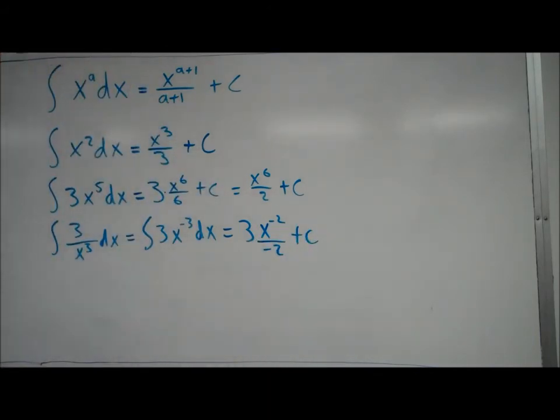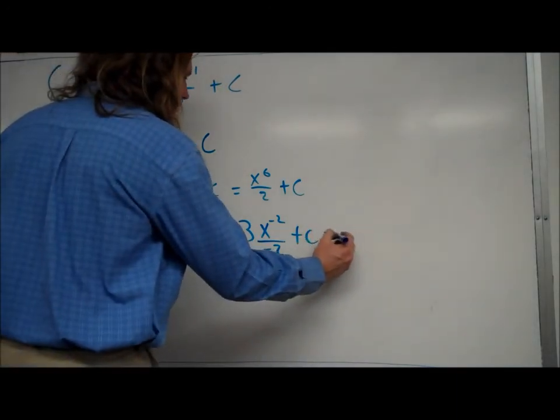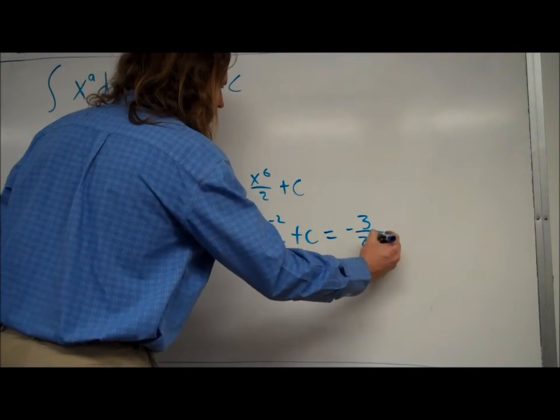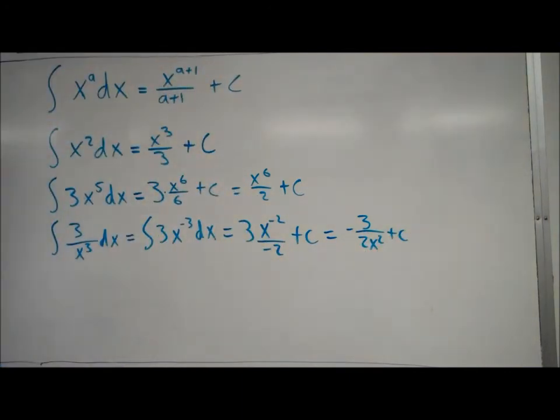You can leave it like that. If you wanted to simplify it, you could rewrite it as negative 3 over 2x squared, plus c, that would be fine.